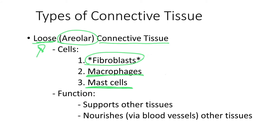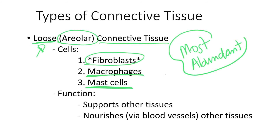The loose connective tissue, or areolar connective tissue, is the most abundant connective tissue of our body. It is found everywhere — in the skin, around blood vessels, around nerves. It is found basically in or around almost every structure of the body. Because it is found basically everywhere, the loose or areolar connective tissue is also referred to as the packing material of the body.